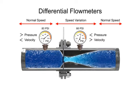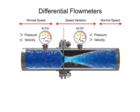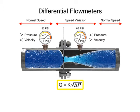With a known differential pressure and velocity of the fluid, the volumetric flow rate can be determined.